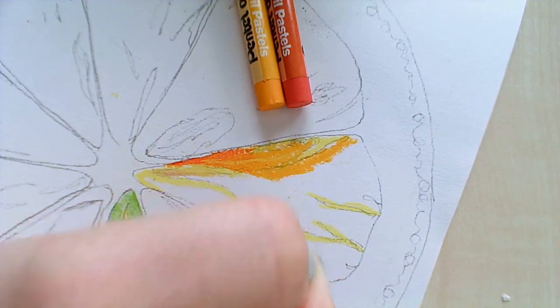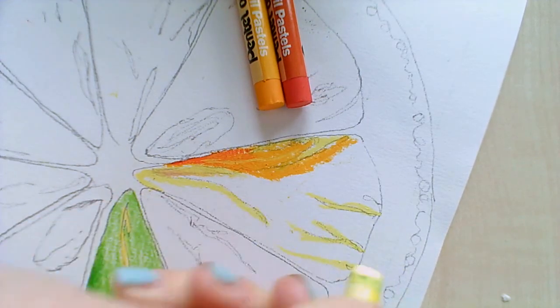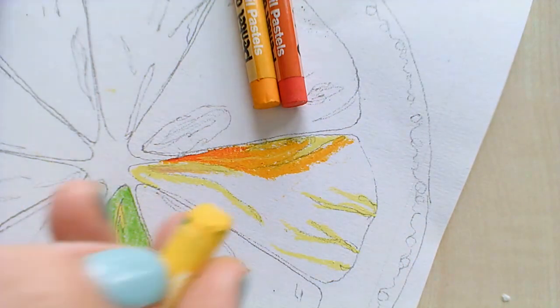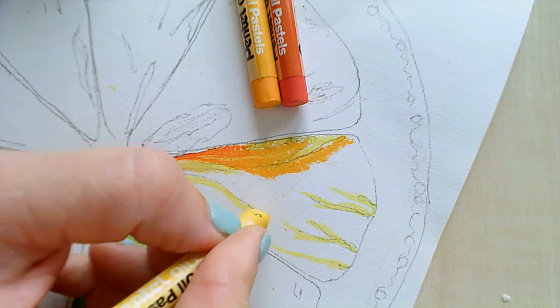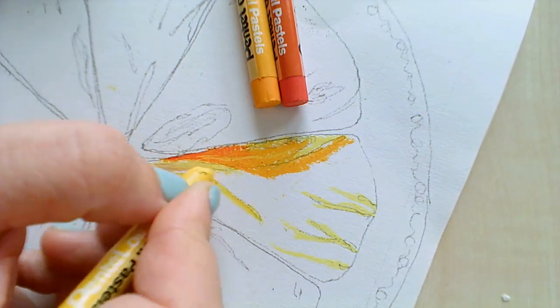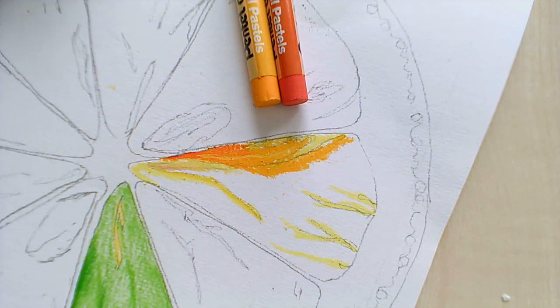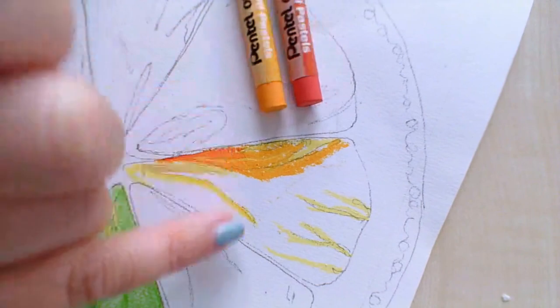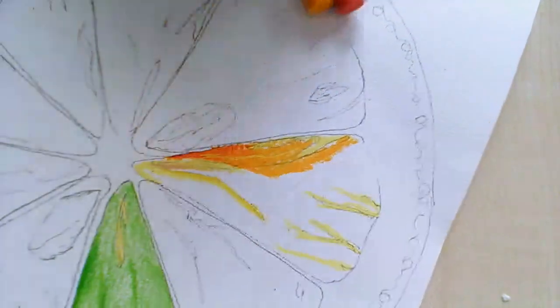Once you've got that on, you can start to even add in another color to the veins and layer that on, so we've got that layering of different tones. You can see there's a nice tone here compared to up there where it's a bit black and flat.